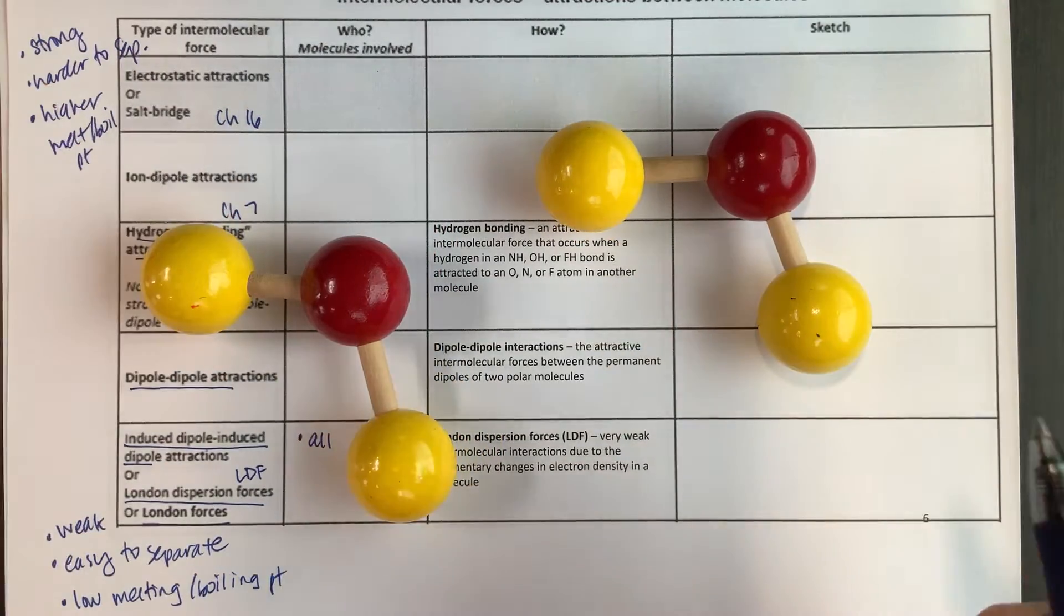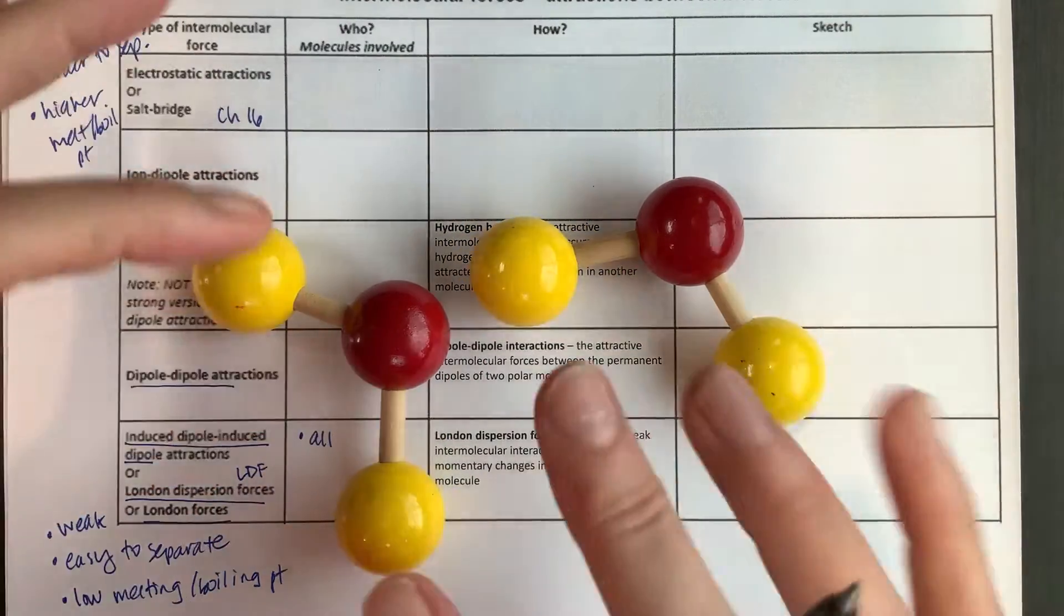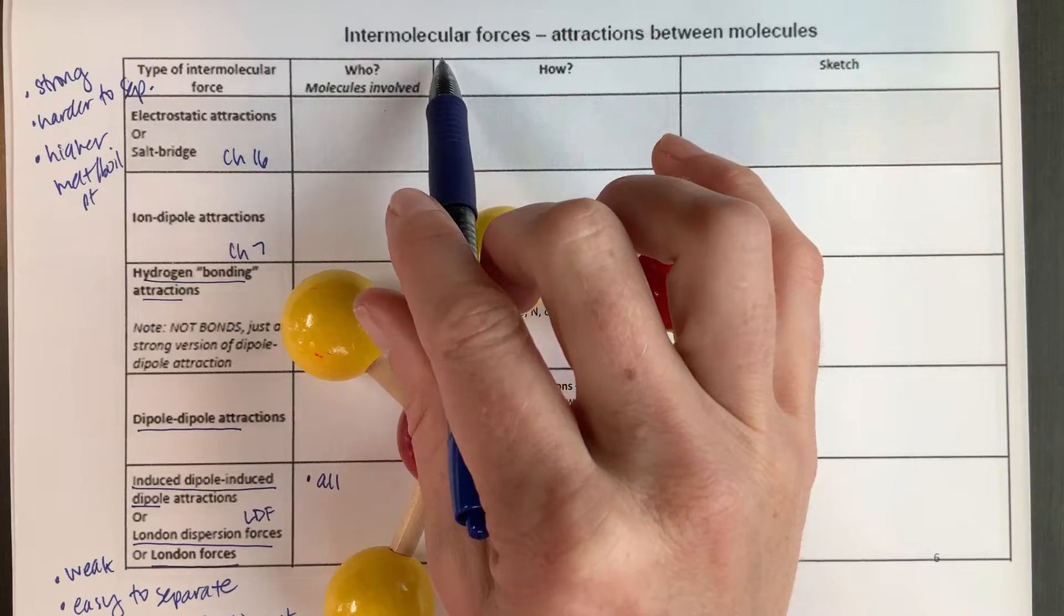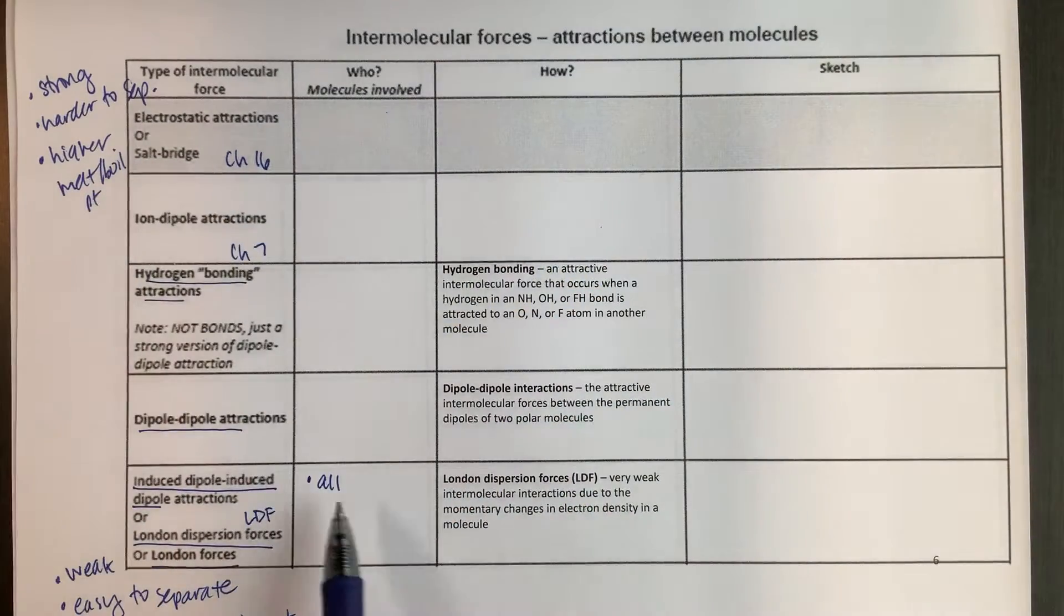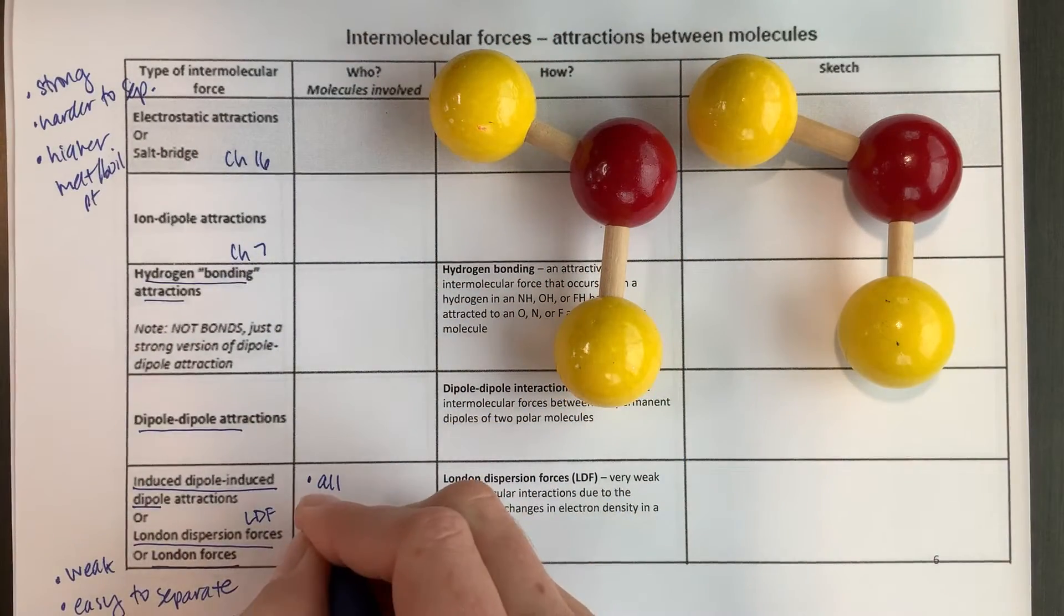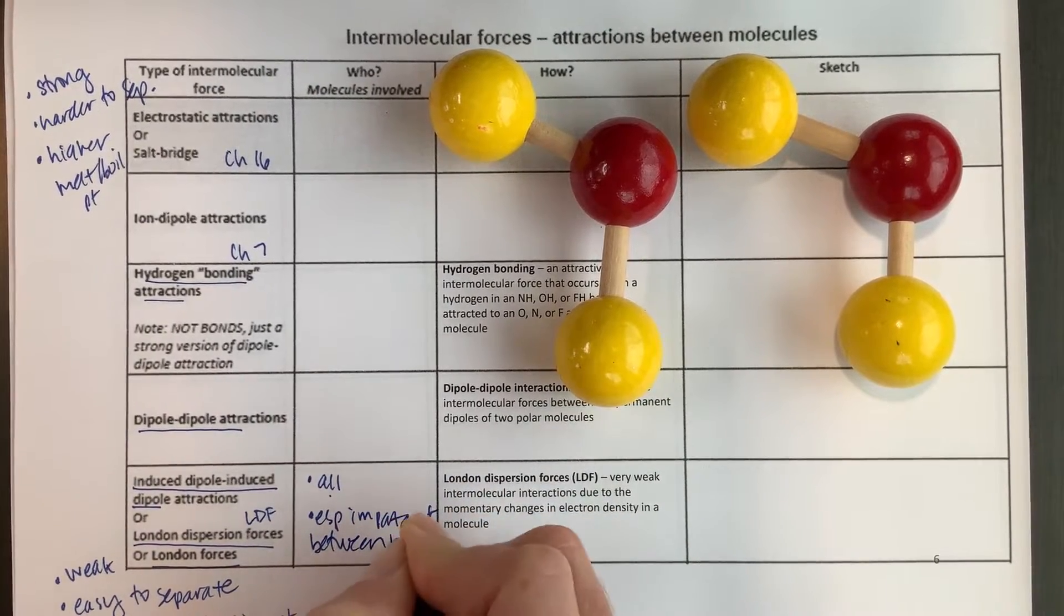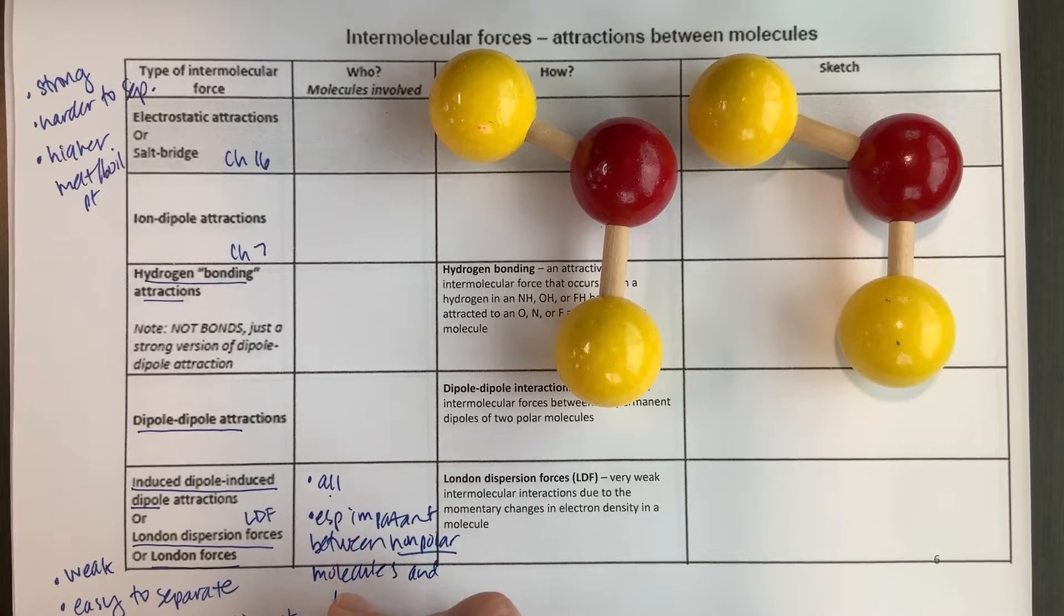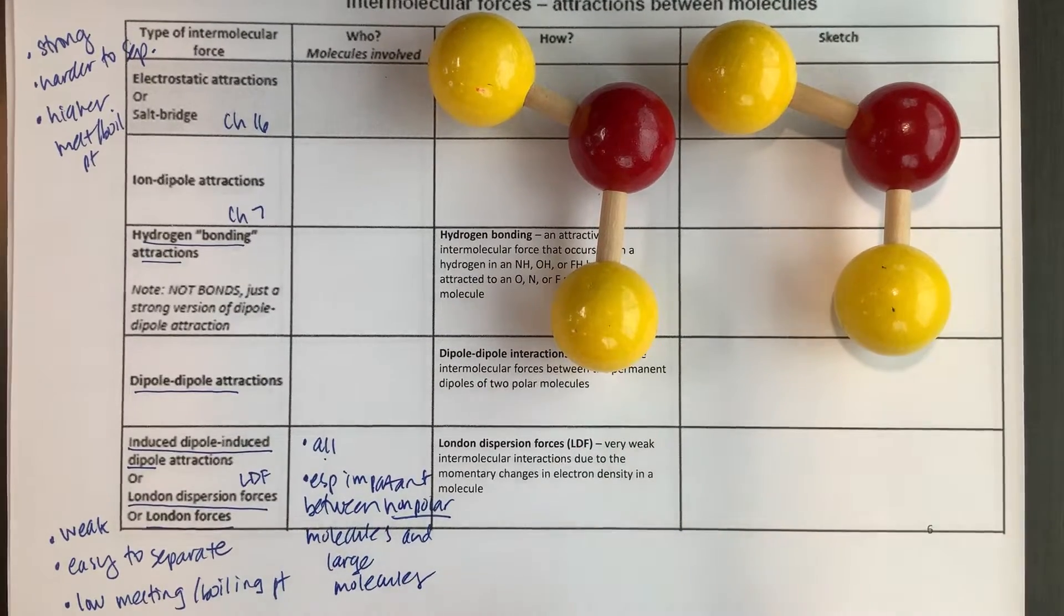We could make an analogy to humans. This is me, this is someone else. You can have just a chance bump, or you can be like, you know what, we are best friends, we're always hanging out. We always face each other this way. And so we have different types of between person relationships, also different types of between molecule relationships.